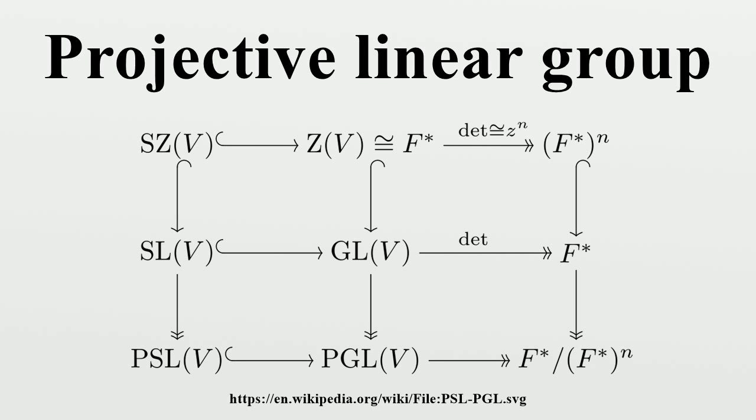The name comes from projective geometry, where the projective group acting on homogeneous coordinates is the underlying group of the geometry. Stated differently, the natural action of GL on V descends to an action of PGL on the projective space P(V). The projective linear groups therefore generalize the case PGL_2 of Möbius transformations, which acts on the projective line.